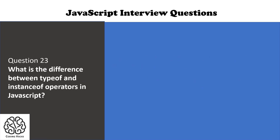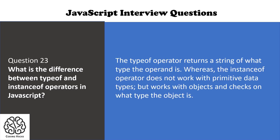The next question is: what is the difference between typeof and instanceof operators in JavaScript? The typeof operator returns a string of what type the operand is. Whereas the instanceof operator does not work with primitive data types, but works with objects and checks what type the object is.